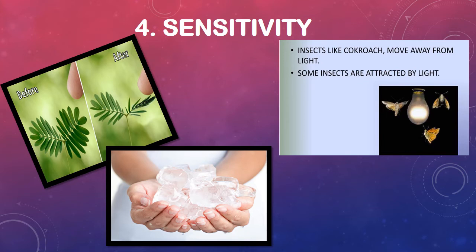Humans and animals can feel things because of sensitivity. If we talk about plants, they have no organs or skin like animals, but plants are also sensitive. For example, the mimosa plant — if you touch it, its leaves will close. Plants are sensitive too. Some organisms like cockroaches and insects move away from light. Living things respond to their environment through sensitivity.